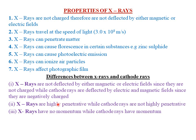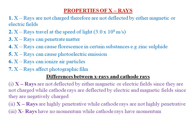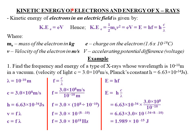The second difference between X-rays and cathode rays is that X-rays are highly penetrative — they have a high penetrating power compared to cathode rays, which are not highly penetrative. The third and last difference is that X-rays have no momentum, whereas cathode rays do possess momentum.